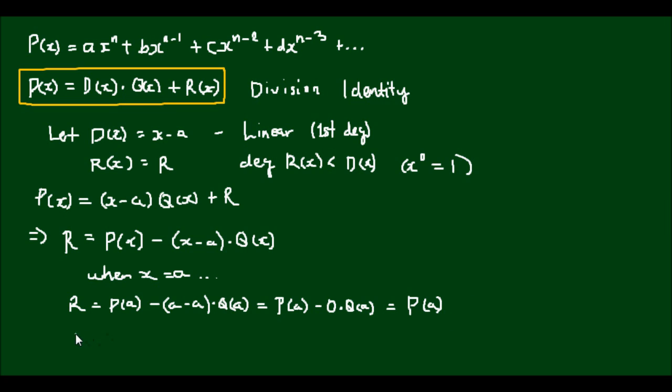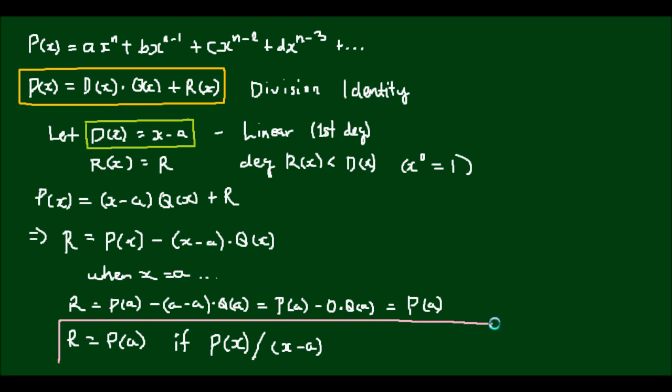And thus we have proven the remainder theorem: r is equal to p of a, if a polynomial p of x is divided by x minus a. And this is what we call the remainder theorem.